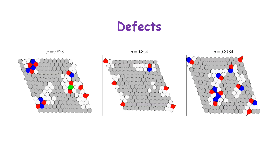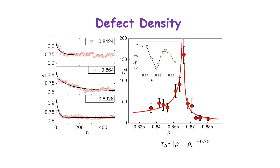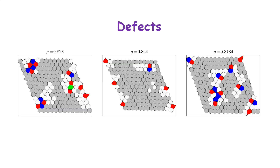In this 2D system you can quantify defects. The number of defects - the fraction of particles with coordination numbers other than six, such as five or seven - also decreases over time. The timescale required to remove these defects also shows a divergence.